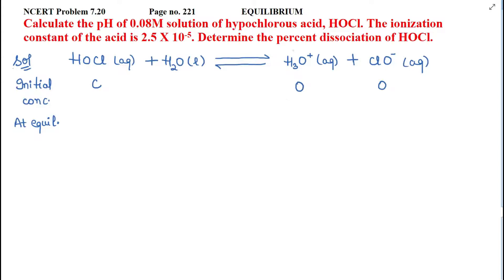At equilibrium, we have alpha as the hydronium ion concentration and alpha as the ClO⁻ concentration, with respect to the initial concentration C. The remaining hypochlorous acid is C minus the amount dissociated. Taking C common, the remaining HOCl is C(1 minus alpha).